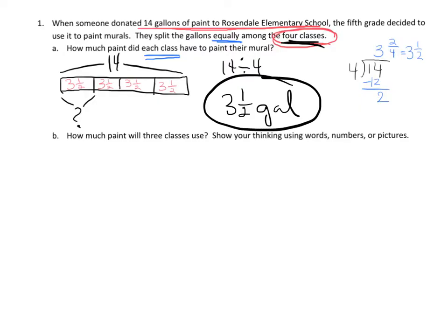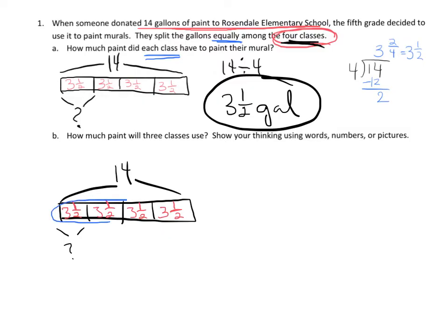Now the question is how much paint will three classes use? So basically we're going to take that original picture. But now we know that each of these units, each unit is worth 3 and a half. And we're supposed to figure out how much is three of them. So that means we're going to do 3 times 3 and a half. And we're going to do that using repeated addition, 3 1/2 + 3 1/2 + 3 1/2.